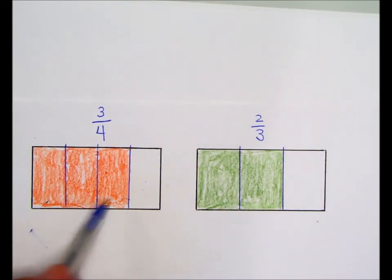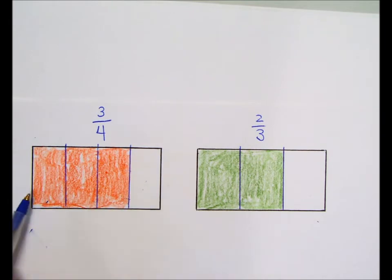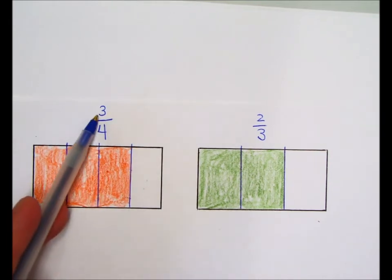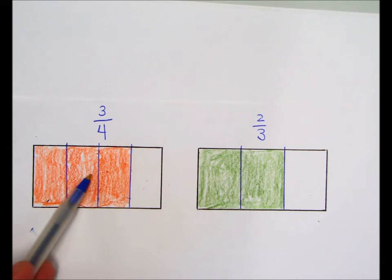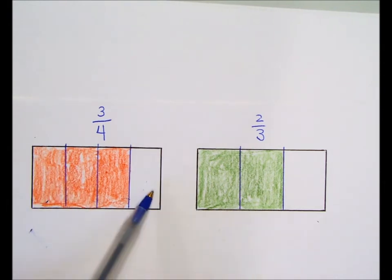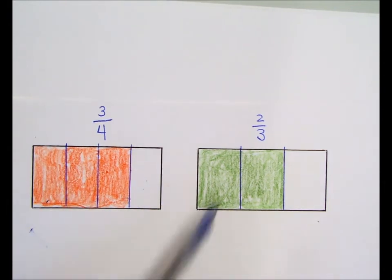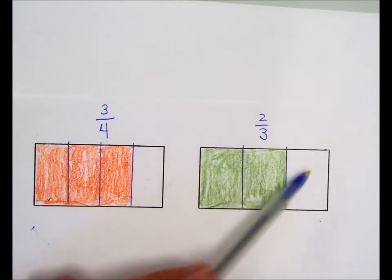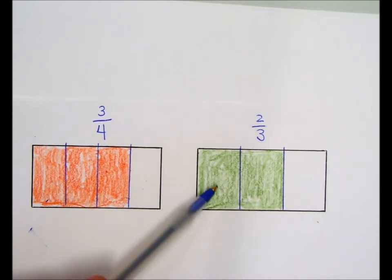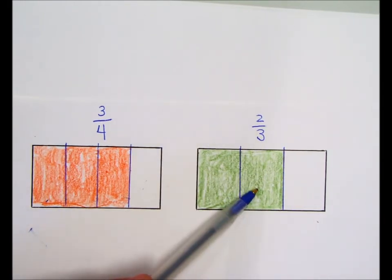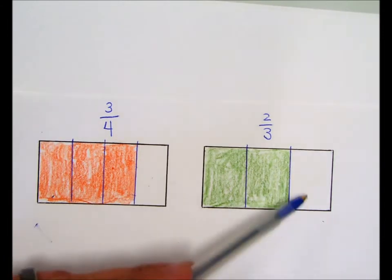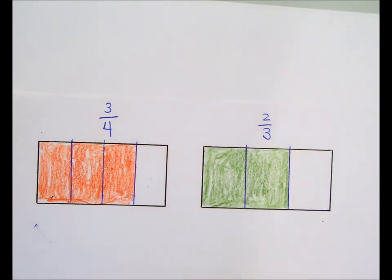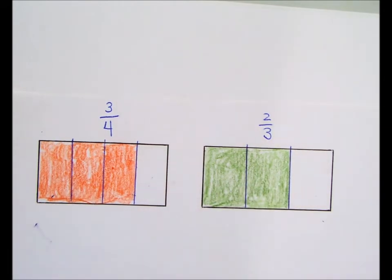So as you can see, here we have one, two, three out of the four are colored. So that's the three - the three refers to these: one, two, three. And the four refers to how many total pieces we have. Here we have two out of three that are colored green. So one is colored green, two is colored green. So that refers to the two. And the three refers to the number of equally sized pieces my whole rectangle is divided into.